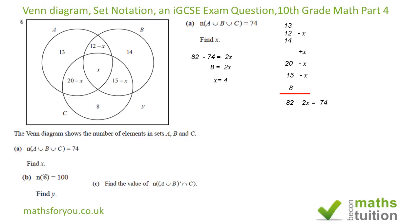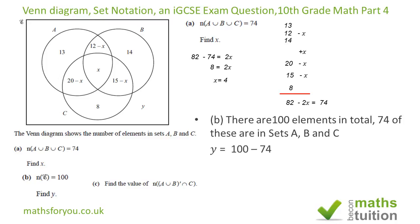Now for part b, because in total we got 100 elements in the whole set here, and we have that A union B union C is 74, what's left must be in y. So y equals 100 minus 74, and the answer should be 26. Hope that made some sense.